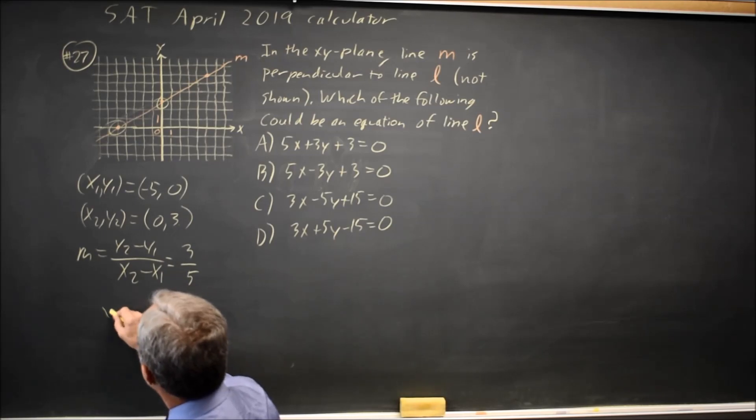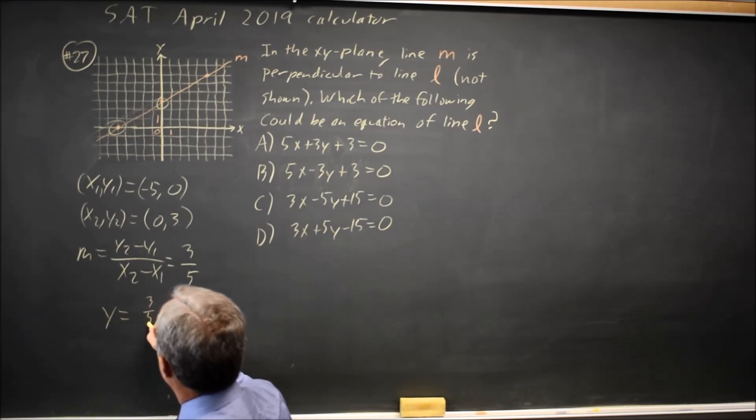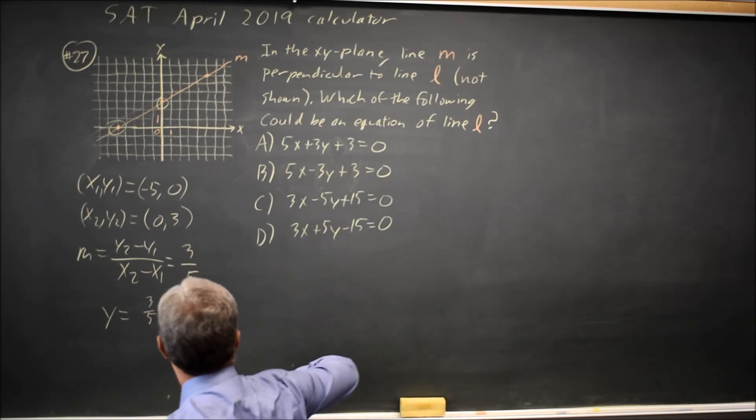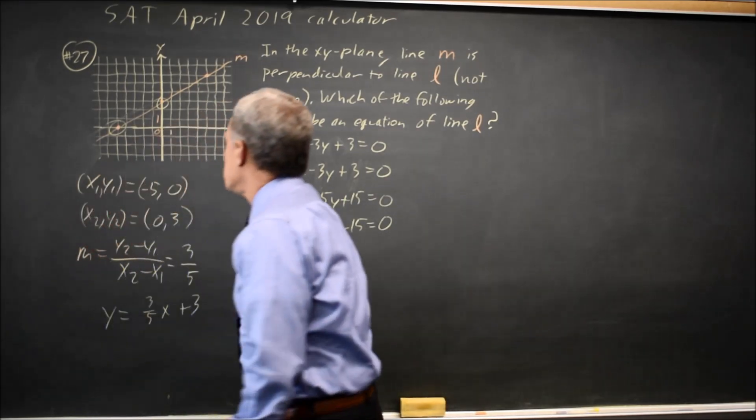And my equation is y equals 3 fifths x plus 3. Although we're just looking for a perpendicular line, so we didn't need to know the intercept.